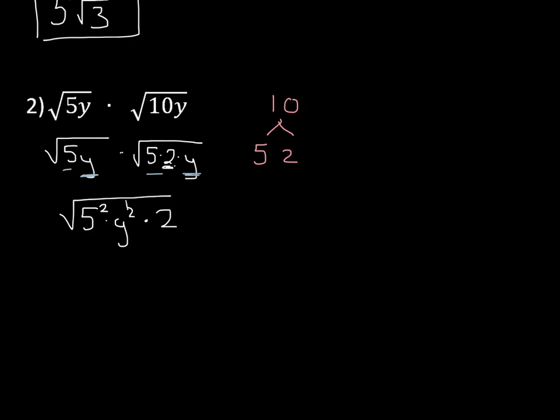And now what comes out of the radical? Anything that has an exponent divisible by 2, because this is a square root. So we can bring a 5 to the first power and a y to the first power. So we're going to have a 5y out front, and then underneath the square root, we're going to have 2.